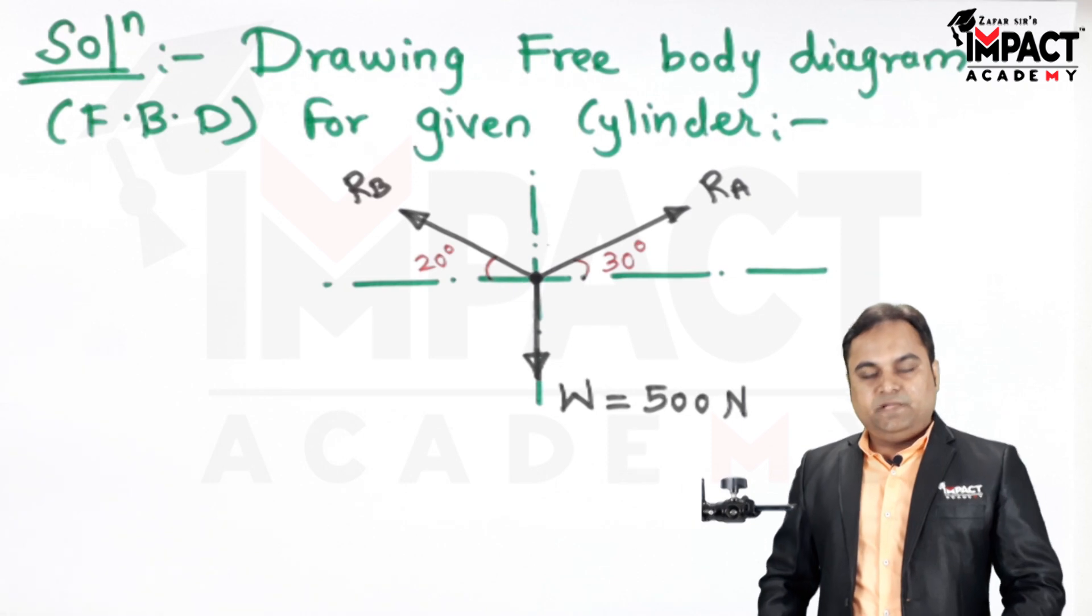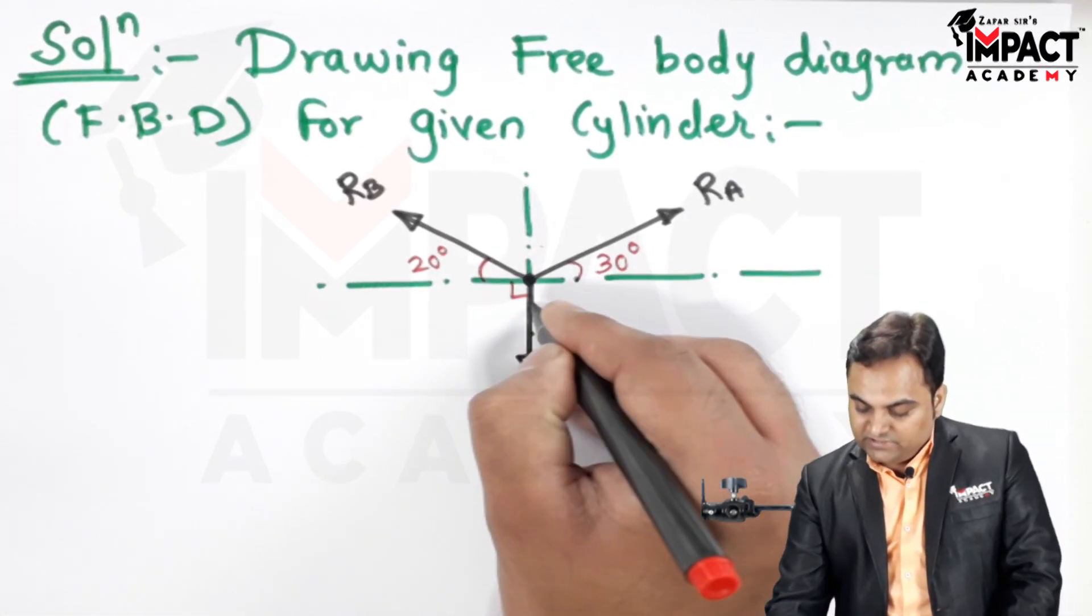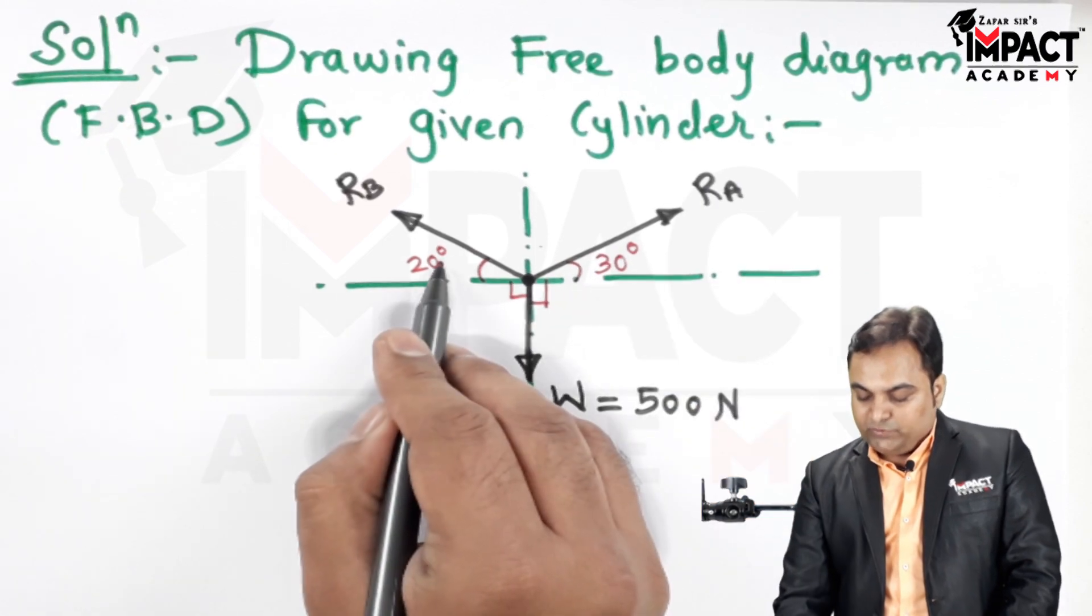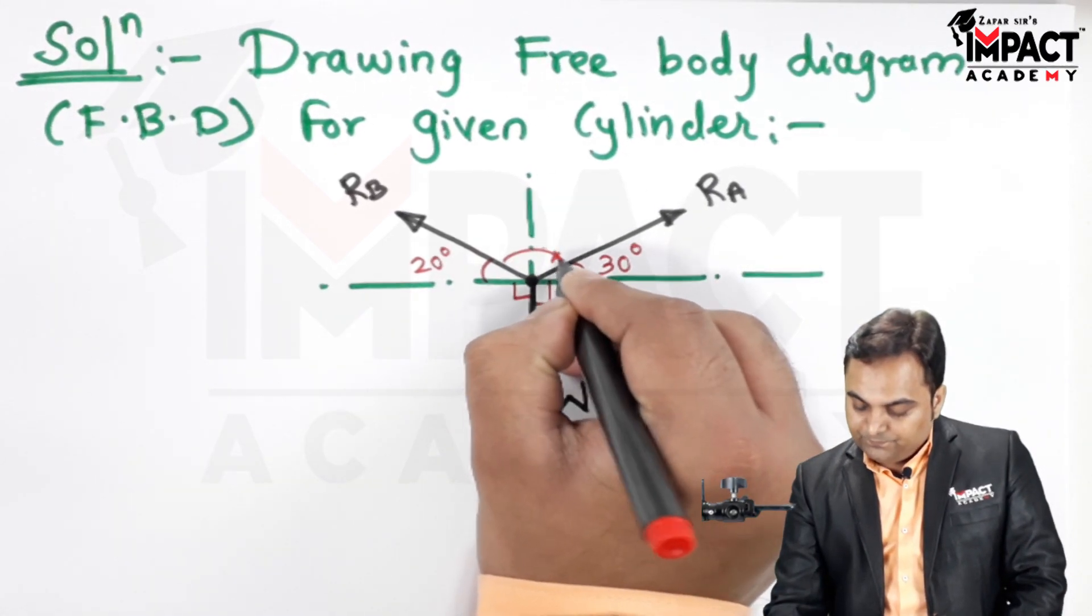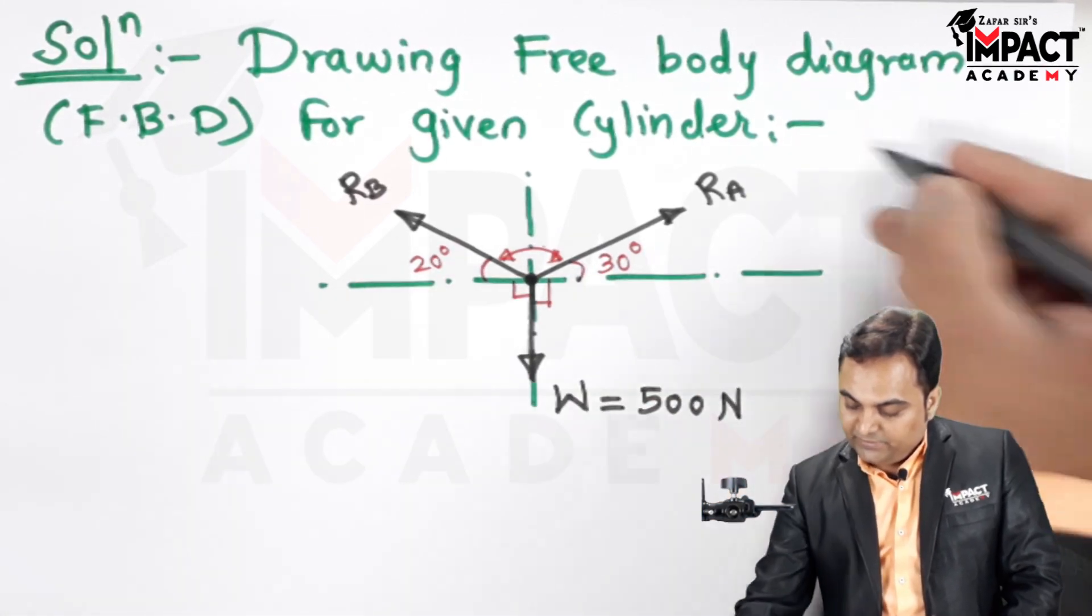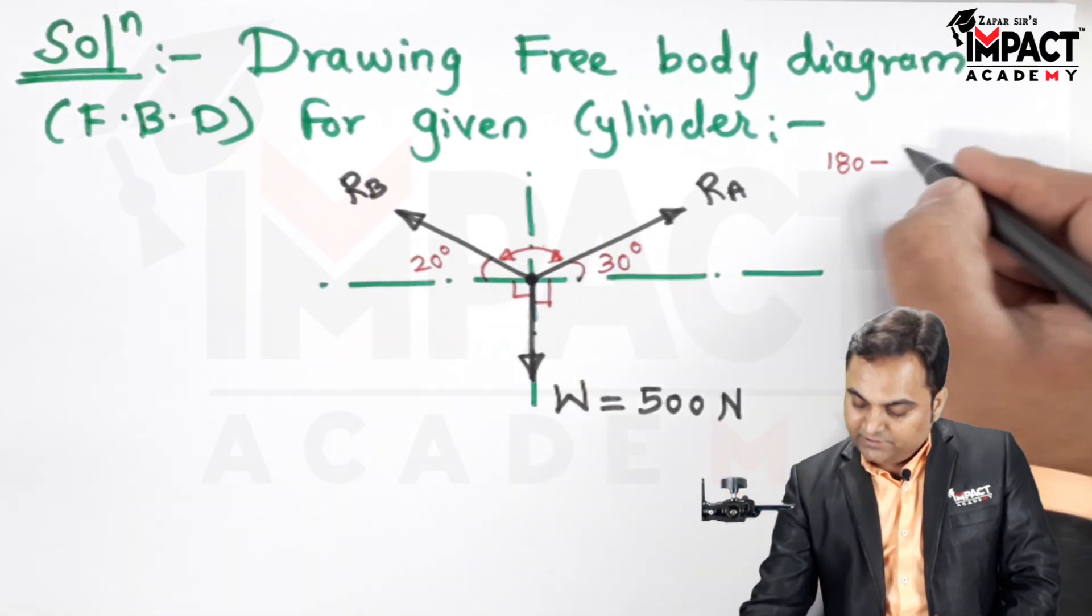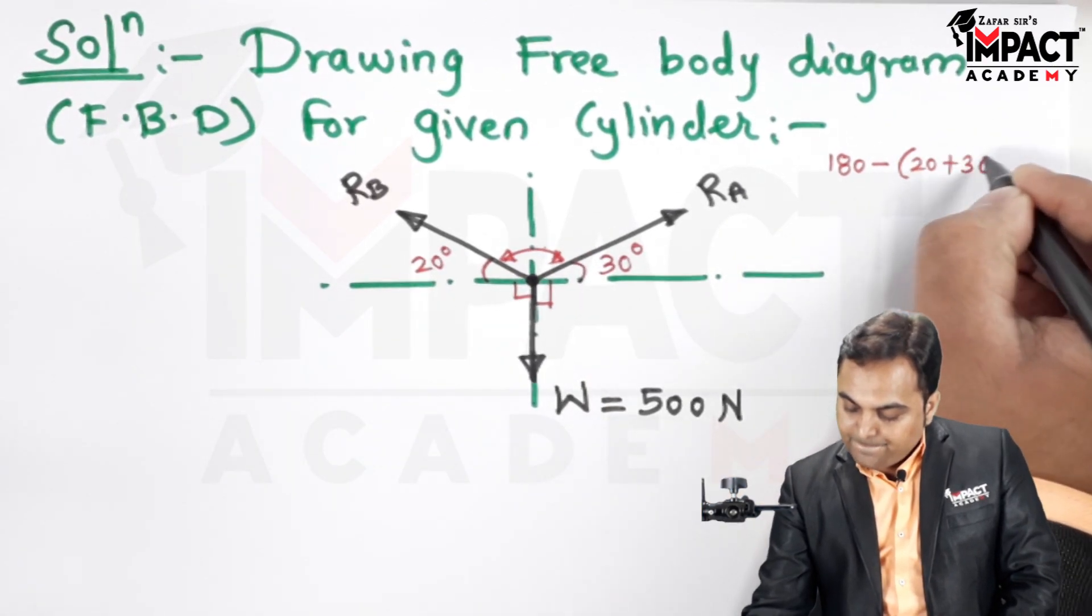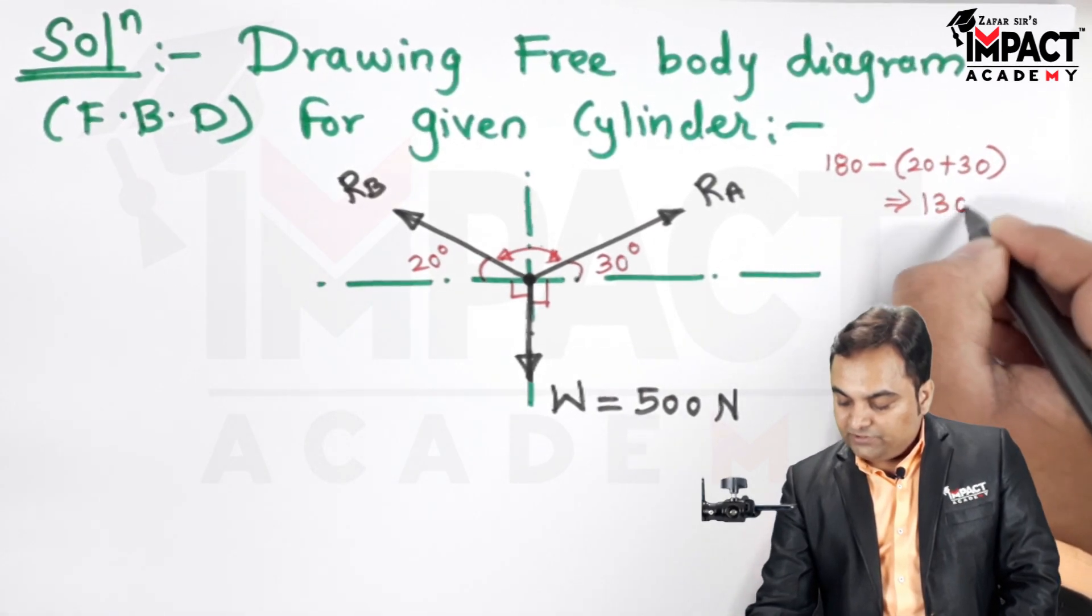So for Lami's theorem we should have three forces. At the same time we should know the angle between all the forces. So here we have this as 90 degree. Since this is 20 degree and here we have 30 degree, so the angle which is remaining, that will be total linear pair is 180 minus 20 plus 30, which is 50 degree, so this comes out to be 130 degree.